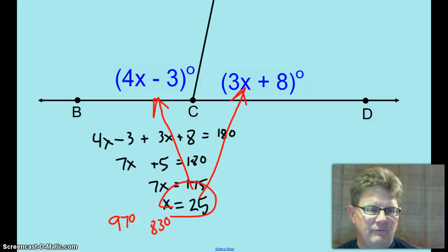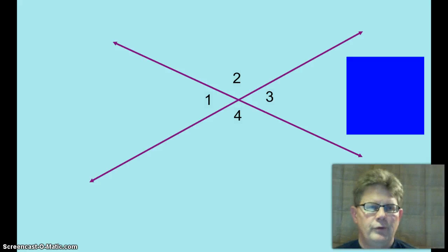4x minus 3 plus 3x plus 8 equals 180. Combine like terms. 7x plus 5 equals 180. 7x equals 175. x equals 25.